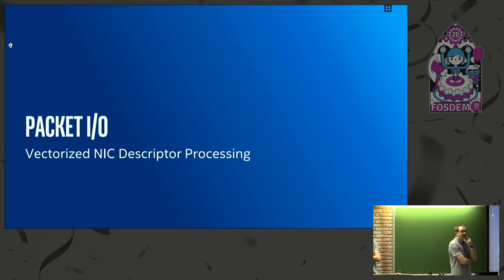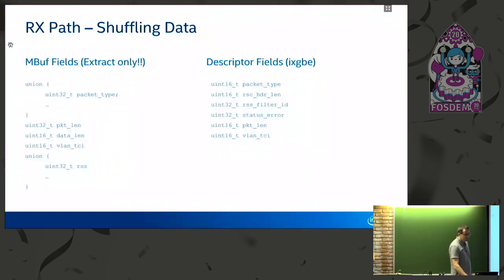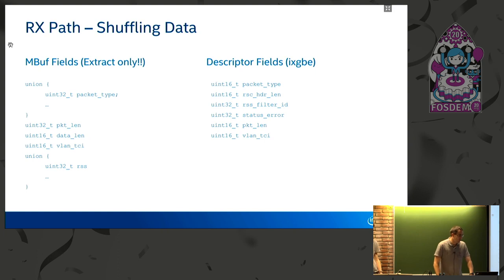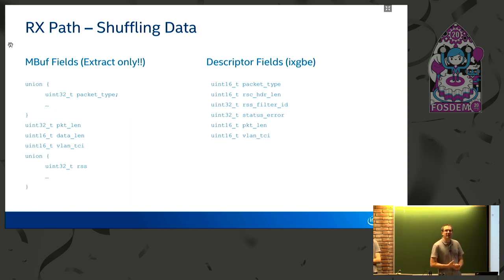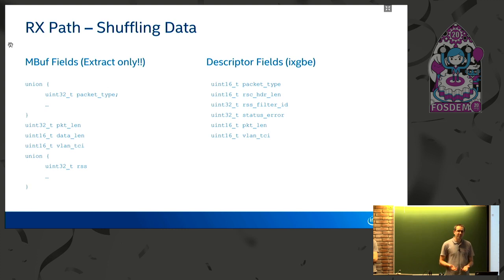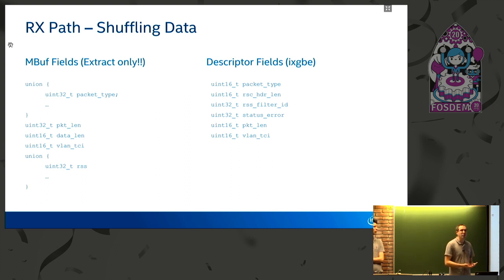I'm going to talk about some of our NIC poll mode drivers in DPDK. Every poll mode driver needs to take the metadata supplied by the network card and transform it into the metadata structure expected by the application — which is the MBUF. On the right I've got a list of descriptor fields from the iXgbe poll mode driver — one of the simpler ones. On the left is the snapshot of the MBUF data fields that correspond to the metadata received from the NIC. We have a roughly one-to-one correspondence for many of these fields: packet lengths, data lengths, VLAN information, and a packet type field that needs to be mapped. There's also a status field which we process separately.